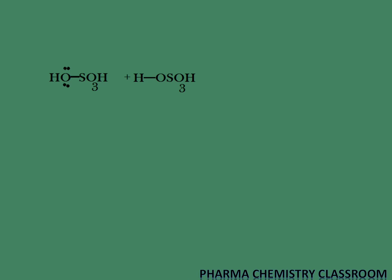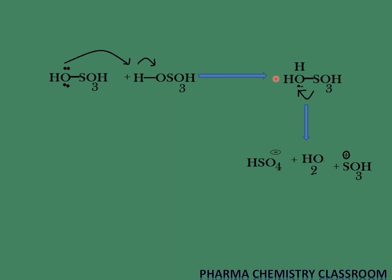Now we are going to see the mechanism. Two molecules of sulfuric acid react, and one molecule gets protonated by the other. One sulfuric acid's OH group abstracts a proton from the second sulfuric acid. Once protonated, we get protonated sulfuric acid with an OH2+ group, which is a good leaving group. It leaves as water, and we get the SO3H+ electrophile along with a hydrogen sulfate ion (HSO4−).